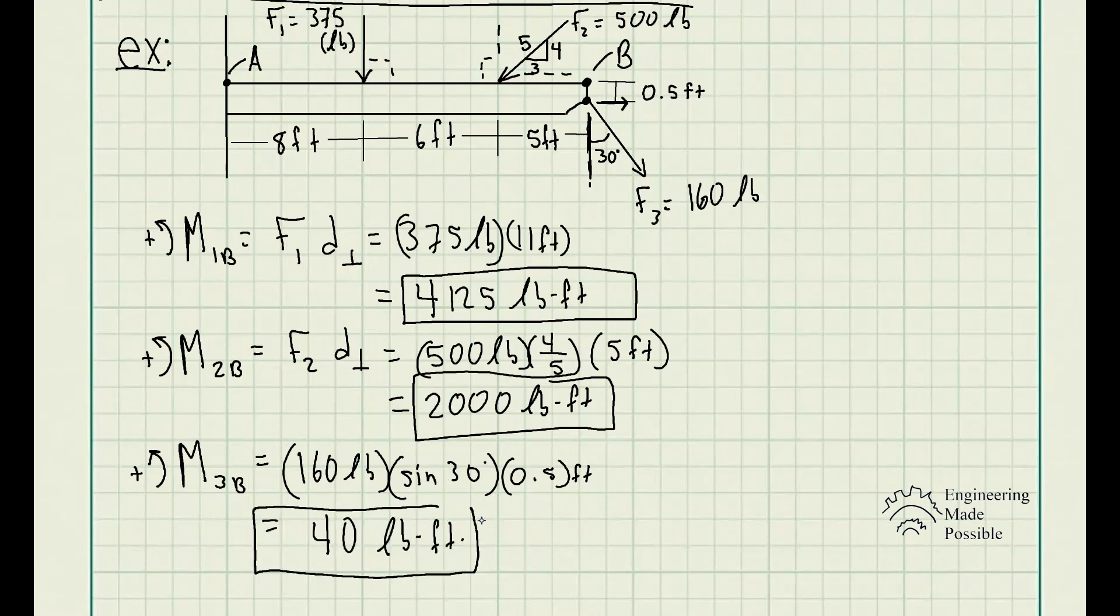So each force causes a moment about point B. And if you want to get the resultant moment about that point, you just add them all up. In this case, since they are all positive. Now for whatever reason, if one moment caused a force that was clockwise, then it will be a negative moment. You would still add up all the moments and get your resultant moment.